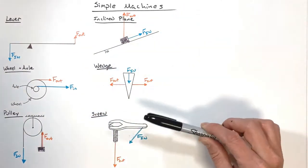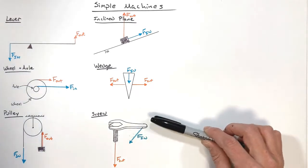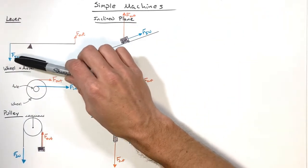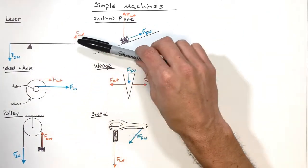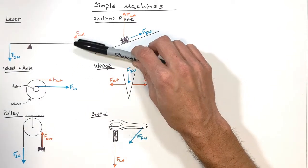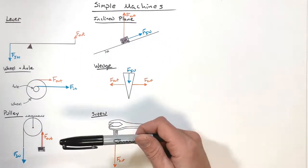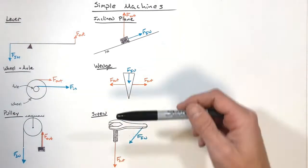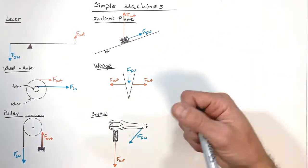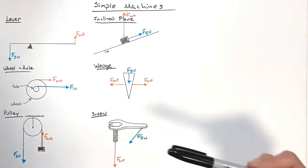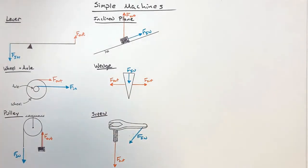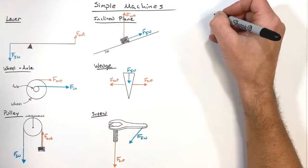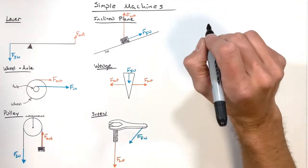Each simple machine works a little bit differently. In some simple machines, the input versus output forces are very similar, like we see with the pulley. In other situations, like something with the screw, you might see an enormous difference between an input and an output force. It just depends on how the machine is designed or used. But in every case, we have input and output forces.